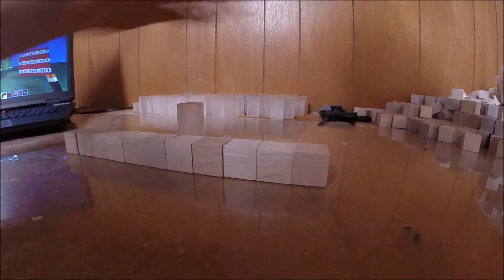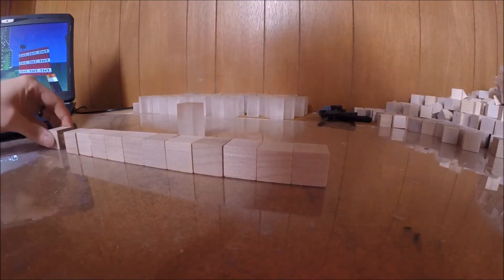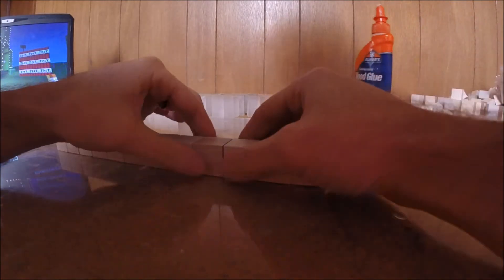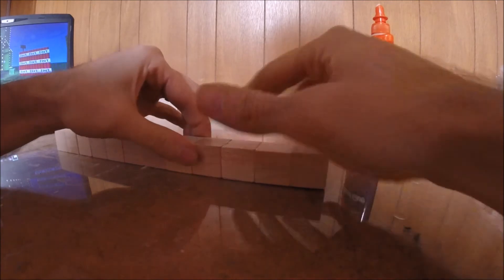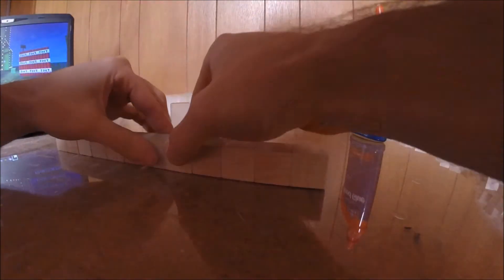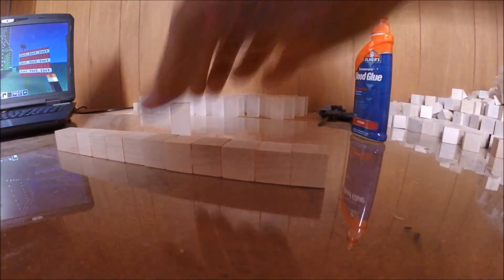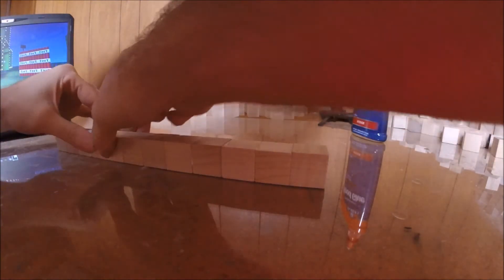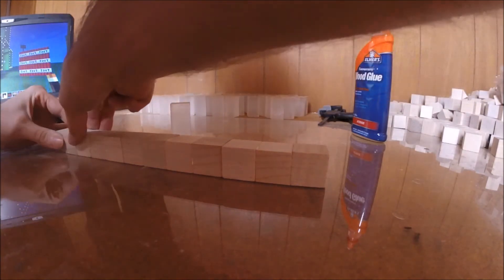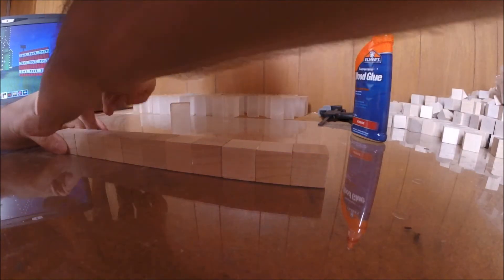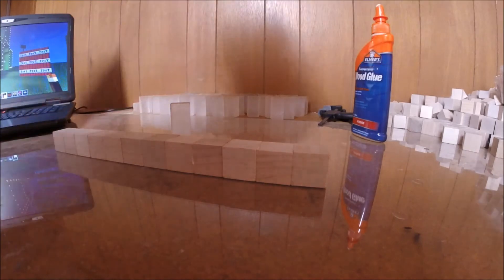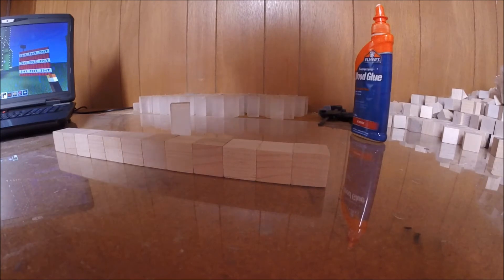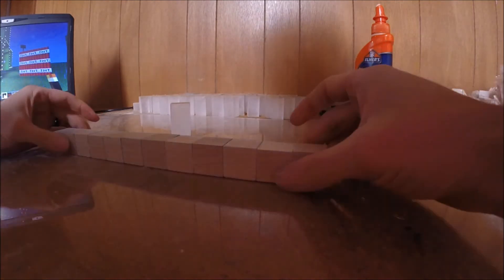And one more cube, we're at 12. Alright, so this is 12. Sometimes what I'll do is I'll put them on loose right at the beginning just to get a whole line done, and then I'll come back through and I'll squeeze them together to get a good bond. I'll wipe up the excess glue.